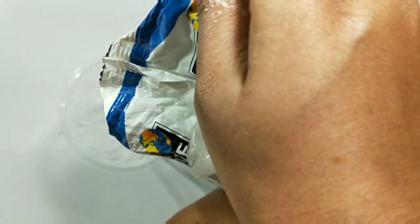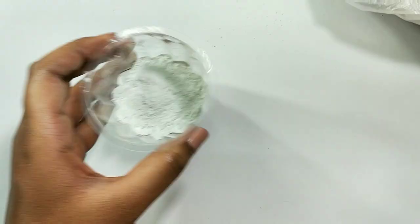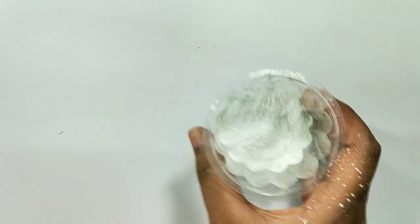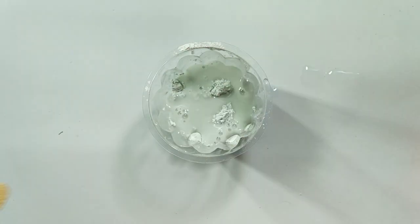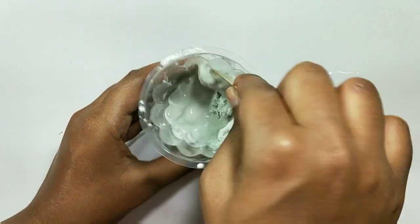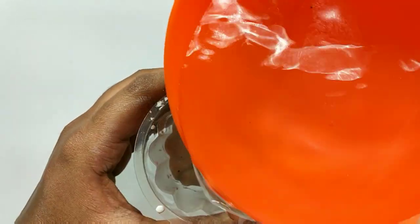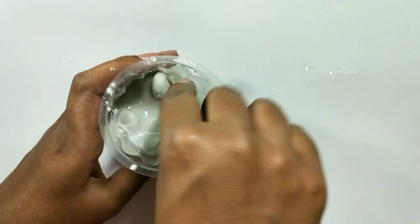Now, we need to make mixture of white cement. For this, take a container, add white cement and add water to it. Keep adding water to it and mixing it till you find it in the right consistency.